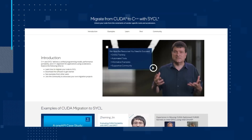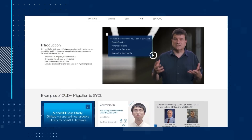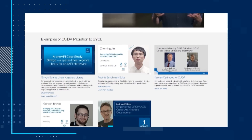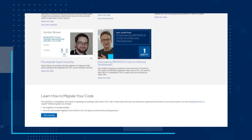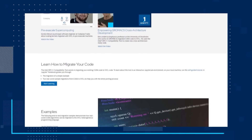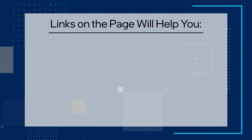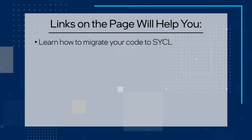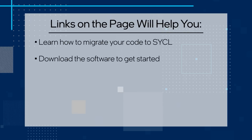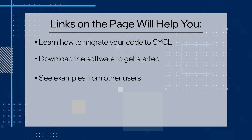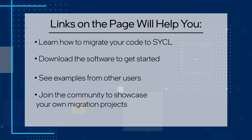First up is a look at how you can migrate from CUDA to C++ with SYCL. This training page will walk you through how C++ and SYCL delivers a unified programming model, performance portability, and C++ alignment for applications using accelerators. You can follow numerous links on the page that will help you learn how to migrate your code to SYCL, download the software to get started, see examples from other users, and join the community to showcase your own migration projects.